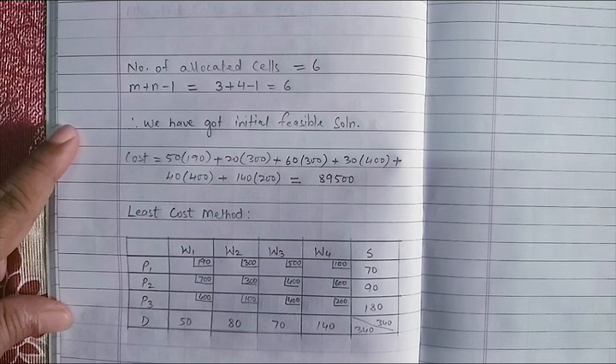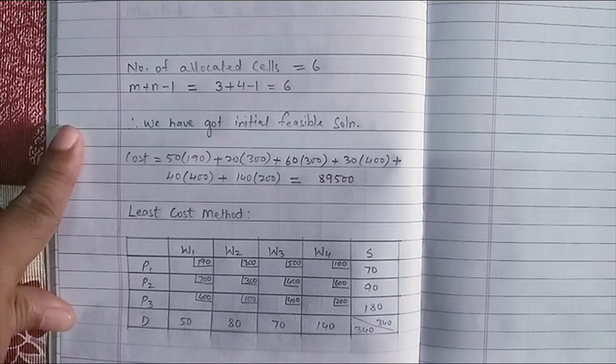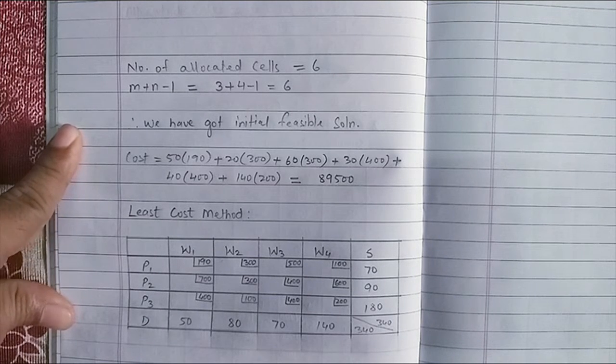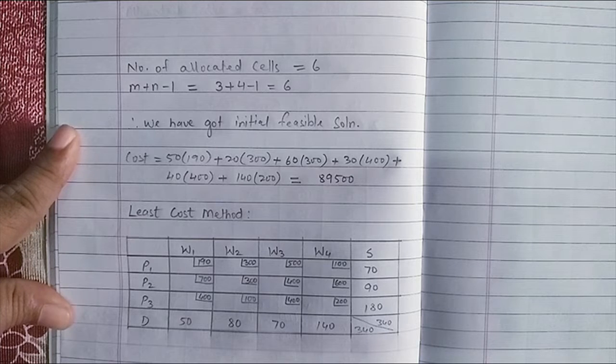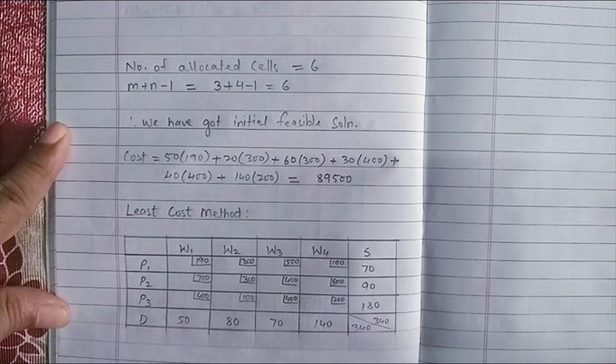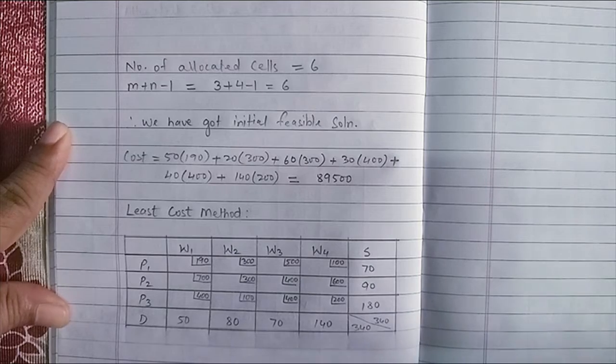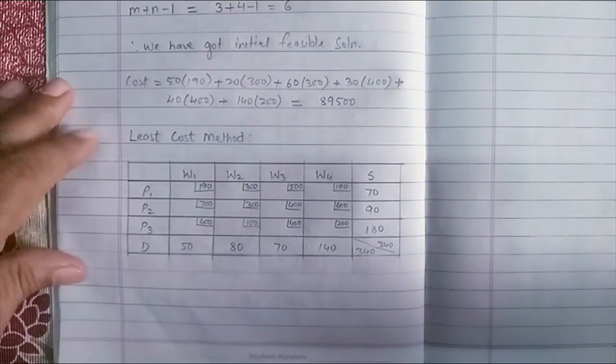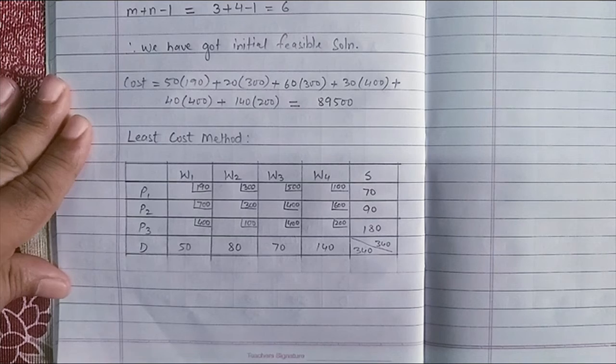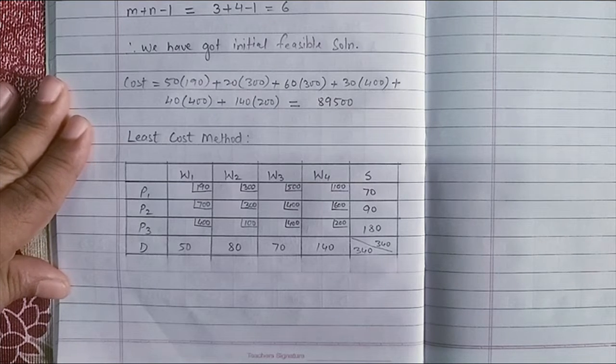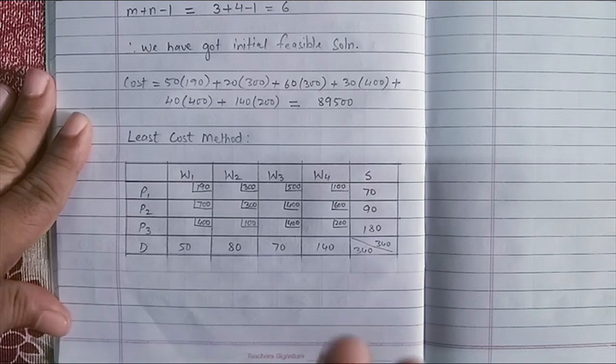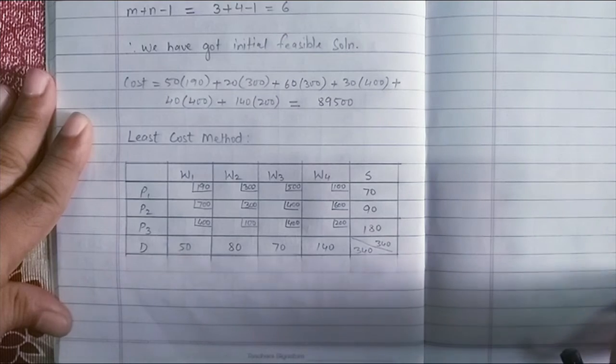Now I will be solving the same problem in a different way using the next method which is your least cost method. And see whether I get a feasible solution and what is the difference between the total cost in both the methods.